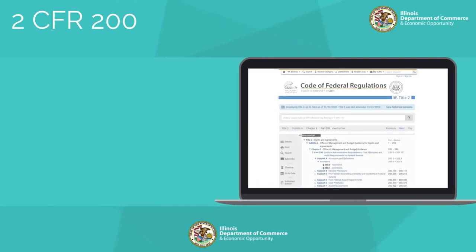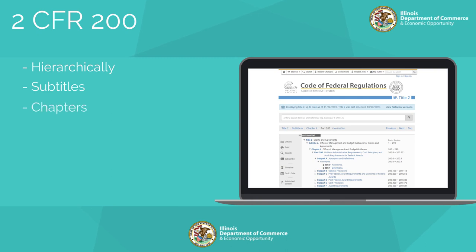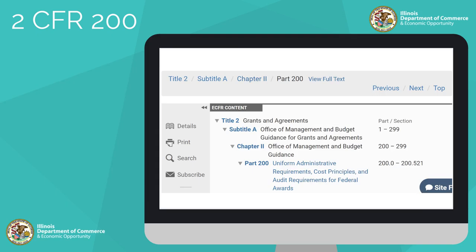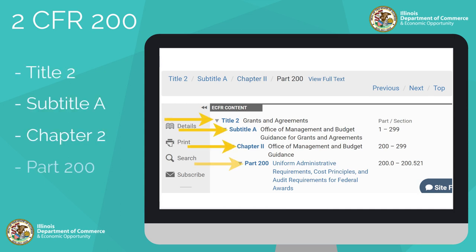Each title in 2CFR 200 is organized hierarchically. A title may be divided into subtitles, chapters, parts, subparts, sections, and appendices. The example shown, taken from the eCFR, demonstrates the hierarchy of Title 2, Subtitle A, Chapter 2, Part 200, otherwise known as 2CFR 200.